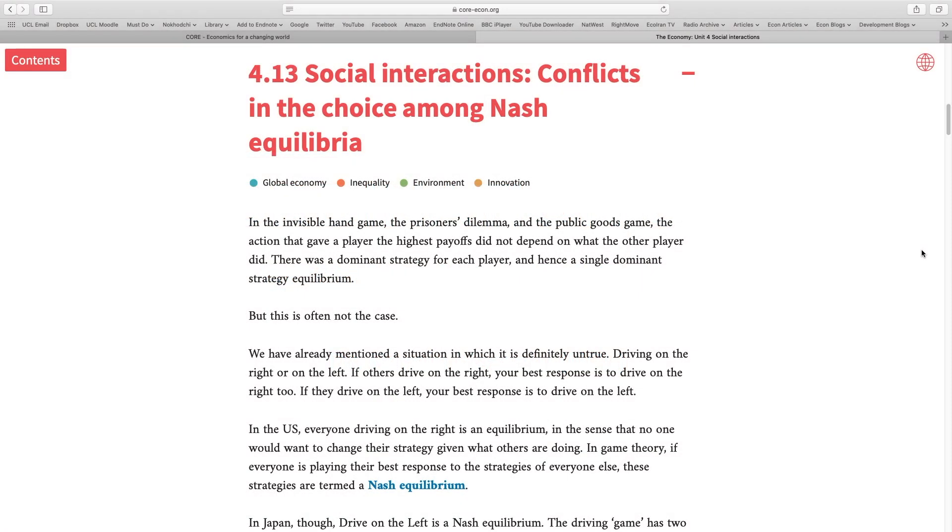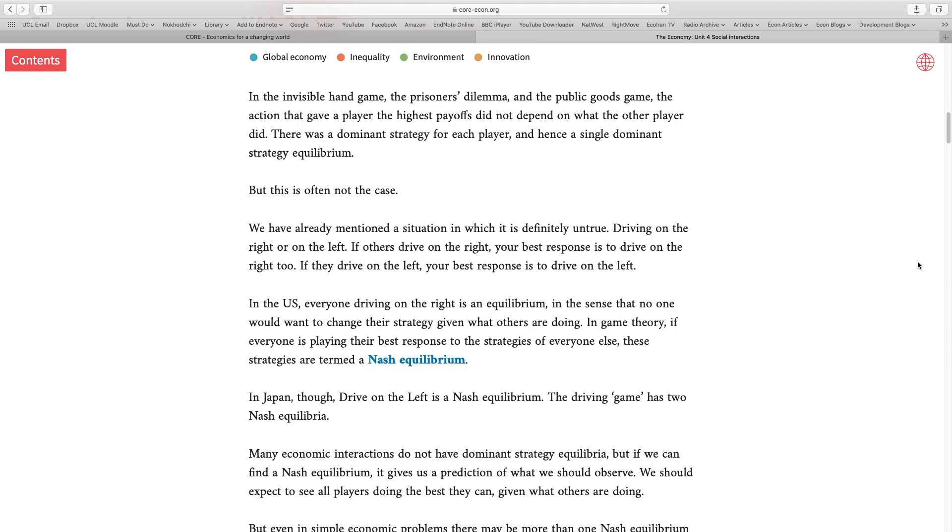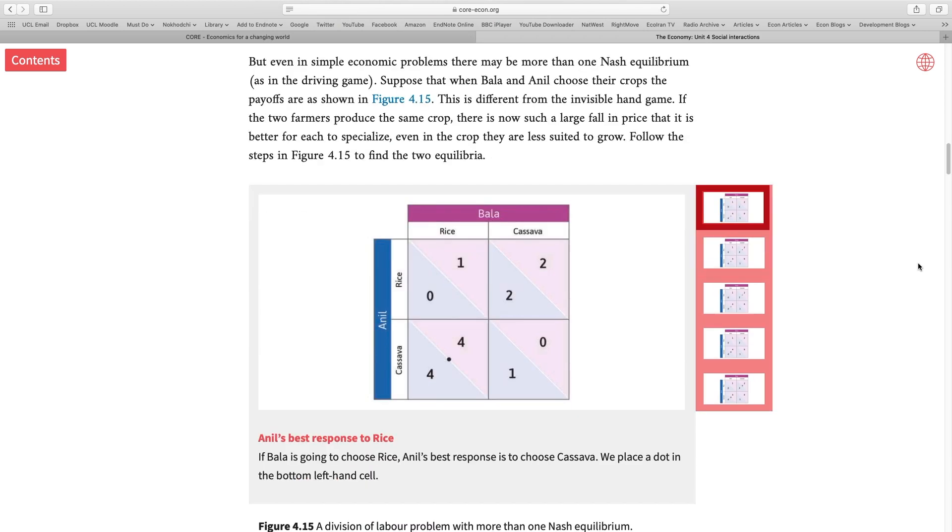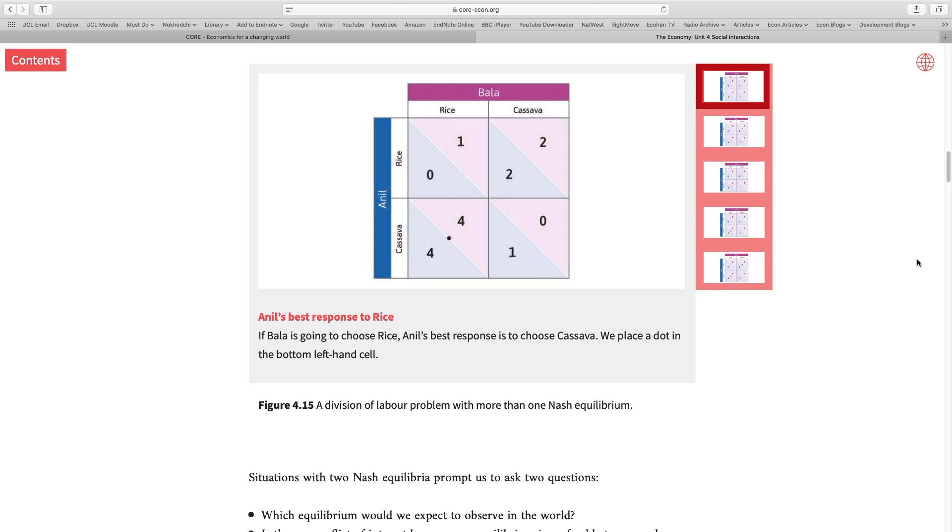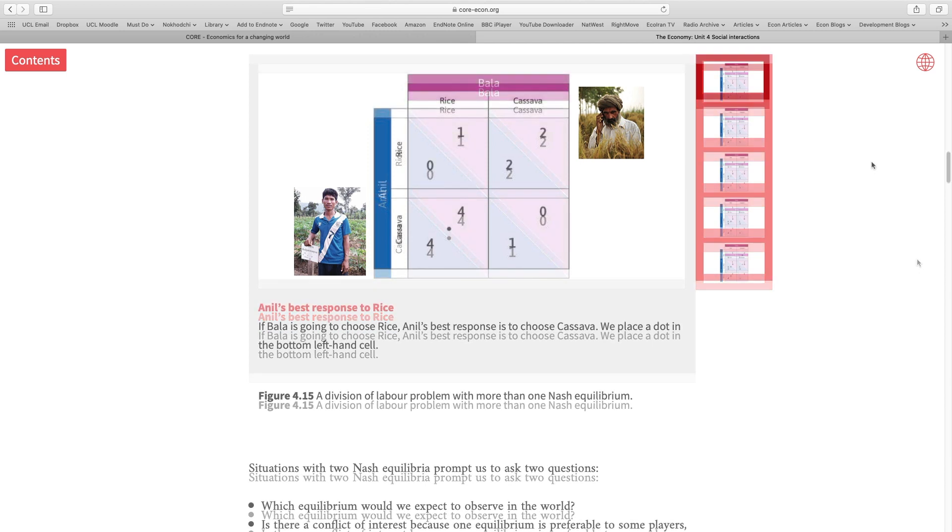4.13 social interactions: conflict in the choice among Nash equilibria. In this section I present to you another game. The players are the same: Bala and Anil. They're making a decision about producing cassava and rice, and they are making this decision at the same time and they cannot communicate with each other while making this decision.